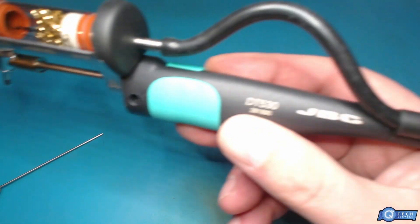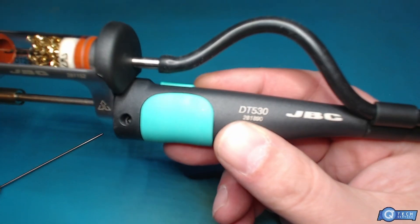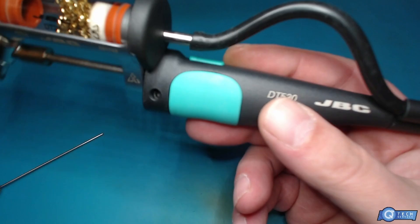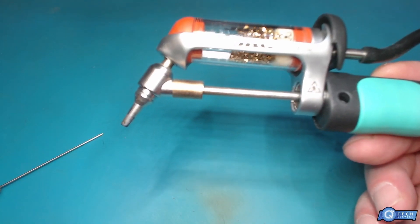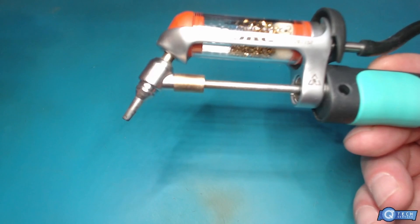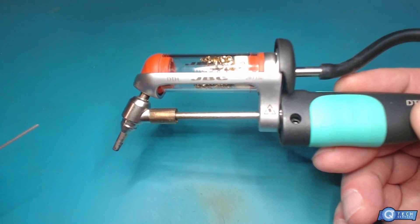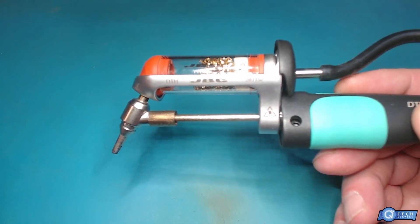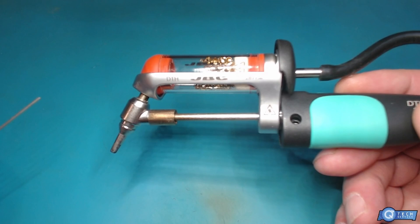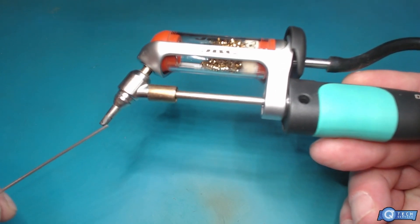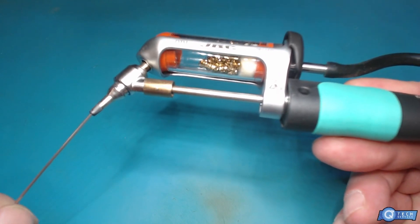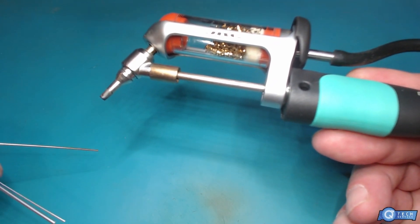This angled soldering iron from JVC suddenly stopped sucking. There's a flashing red light which indicates a clogged system, but there's nothing clogged.